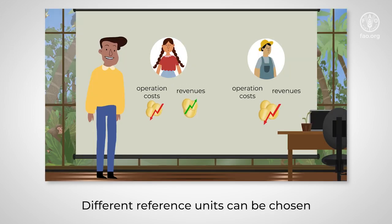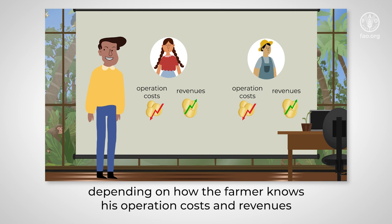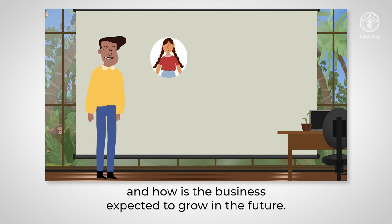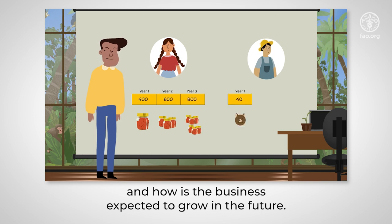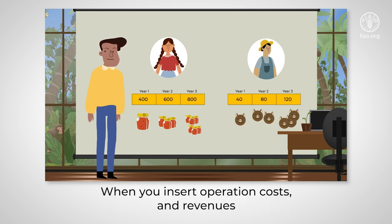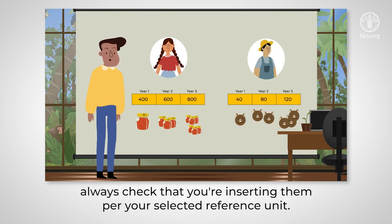Different reference units can be chosen depending on how the farmer knows his operation costs and revenues, and how the business is expected to grow in the future. When you insert operation costs and revenues, always check that you are inserting them per your selected reference unit.